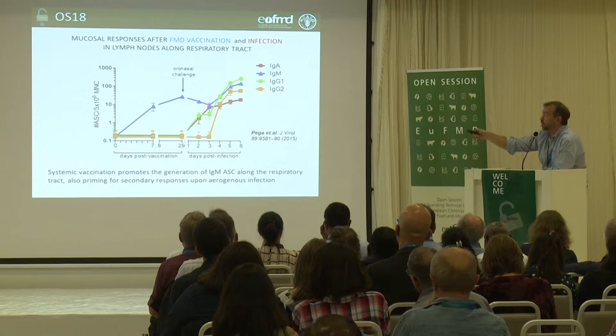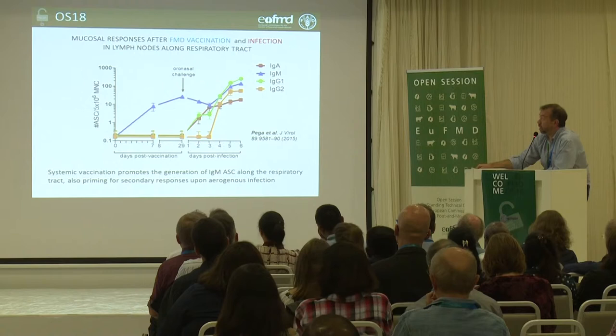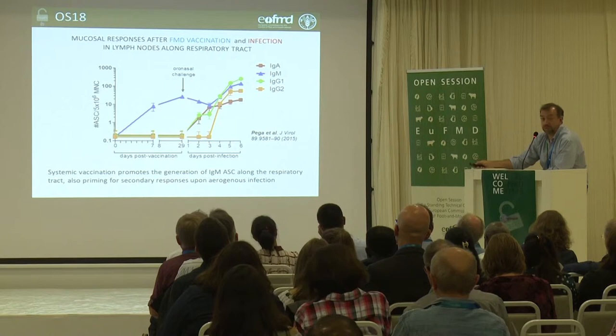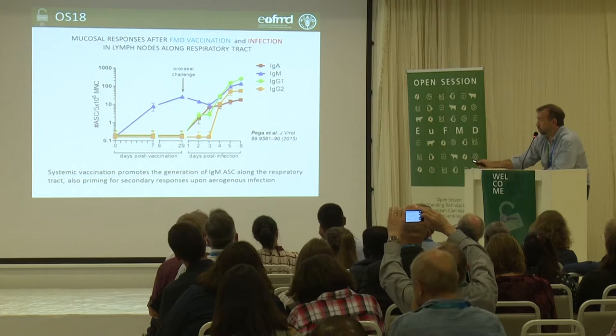Interestingly, vaccination also promotes a secondary response at the mucosal level after oral-nasal challenge. You see a burst of different isotypes really fast — look at the days: one, two, three days. You have detection of IgG1 antibody-secreting cells as well as other isotypes not present when you infect a naive animal at the mucosal level.